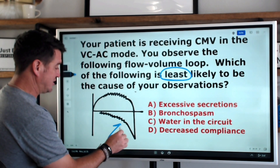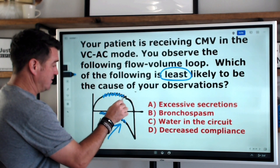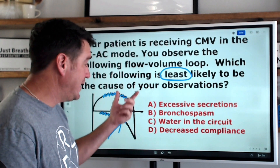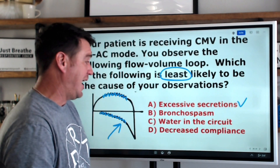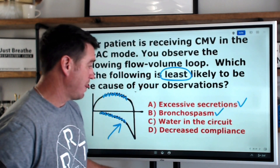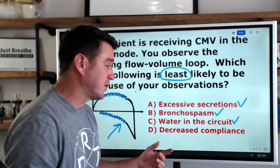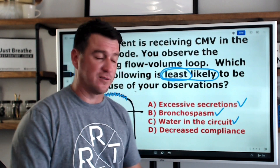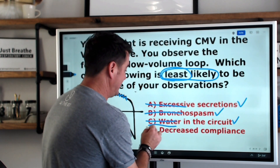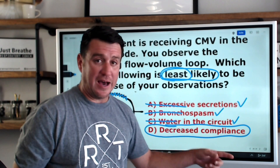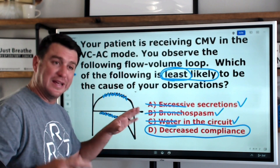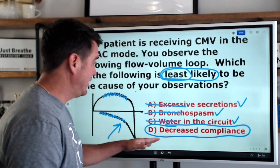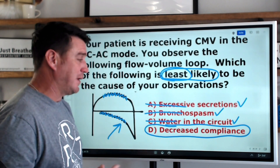We look at the waveform and see a scoop, plus sawtooth patterns on both the inspiratory and expiratory sides. Excessive secretions — 100% it could be that. Bronchospasm — yes, it could be. Excessive water in the circuit — yes, 100%. But the question asks which is least likely. The answer is D: decreased compliance. You have to recognize that the flow volume loop is not helpful at all in identifying decreased compliance in mechanical ventilation.